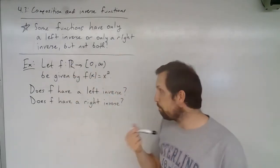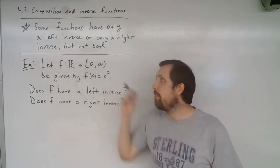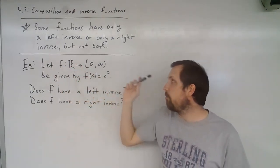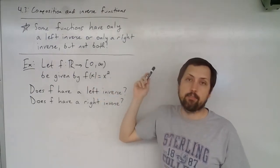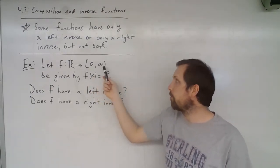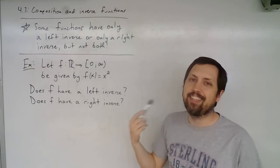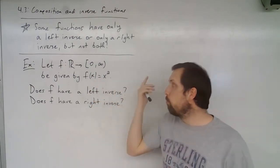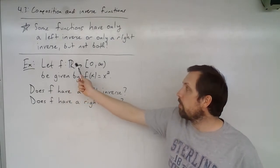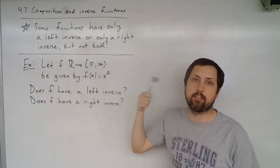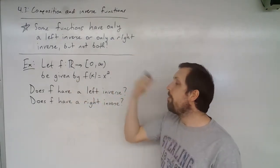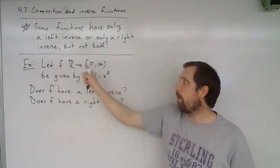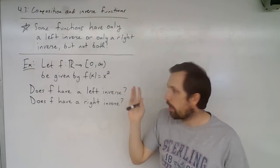Let's look at this example. We have f mapping the reals into the non-negative reals — the interval zero to infinity. We define f by the rule: take any real number and square it. This is a well-defined function: you take any real number, square it, and you get something in zero to infinity.